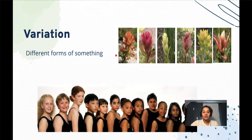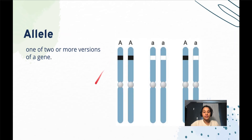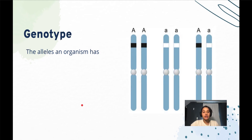Variation refers to different forms of something. So you can have variation in your skin color, hair color, hair texture, or different heights. Variation is different forms of different phenotypes and different traits. An allele is one of two or more versions of a gene.